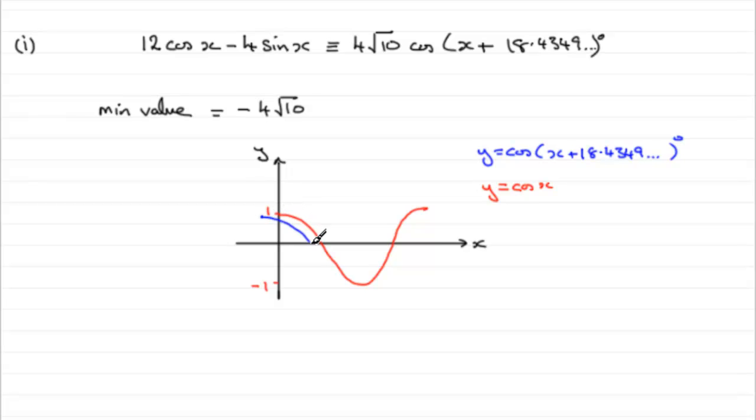This graph then is going to be translated to the left 18 odd degrees. So it's going to be fairly close to the red one, coming down like so, back up there, and going up to the 1.